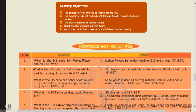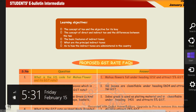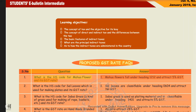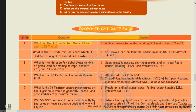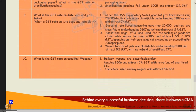I have highlighted the proposed GST rate questions and answers. The first question is: what is the HS code for Mahua flowers and its GST rate? The answer is that Mahua flowers fall under heading 1211.21 and attract GST at 5%. Check the answers they have given because these kinds of questions are important — they may ask in objectives or elsewhere.